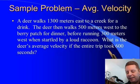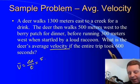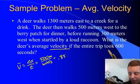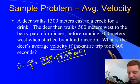Same problem again. Our deer walks 1,300 meters east, then 500 west, then 300 west. What's the deer's average velocity if the entire trip took 600 seconds? Well, average velocity is our change in position, or our displacement over time, which we said was 500 meters east over 600 seconds, or 0.833 meters per second. And since it's a vector, we have to give it a direction: 0.833 meters per second east.